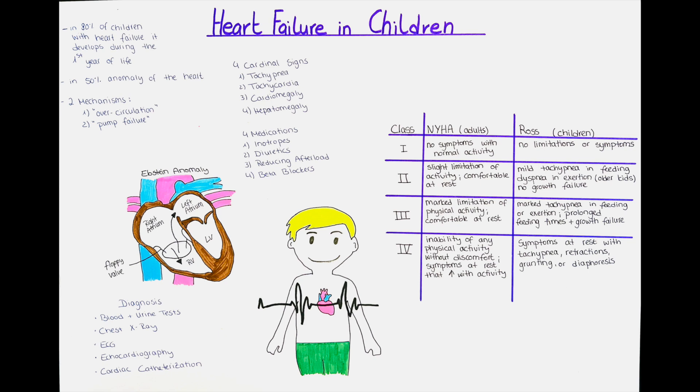The other type of heart failure is the reduced myocardial contraction. This is also the type that most adults suffer from, and it is characterized by a reduced myocardial contraction. It can result from myocarditis or chemotherapy. In neonates and young infants it can also result from obstructive lesions such as aortic stenosis or coarctation of the aorta, or from severe hypertension.